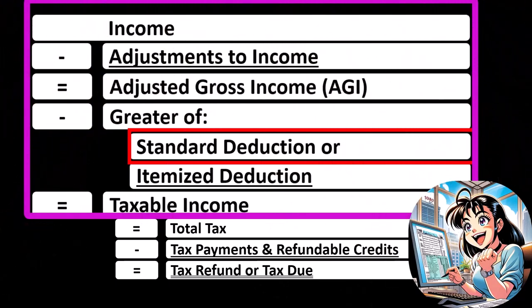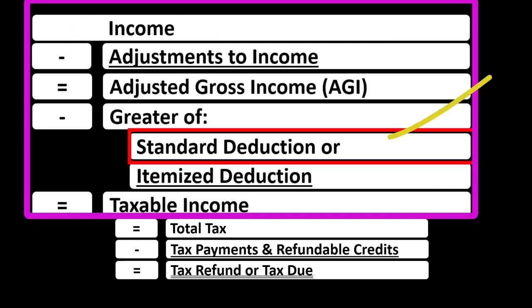Income is the top line, and the expenses are going to be broken out into deductions — which you could call the adjustments to income, or above-the-line deductions, Schedule 1 deductions — and what we might call the below-the-line deductions, which are either the standard deduction or itemized deductions, whichever is greater.